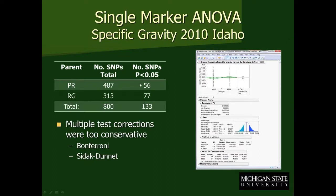We said let's just do single marker ANOVAs on all 800 simplex segregating SNPs. In Premier Russet we have 487 simplex SNPs segregating, and in Rio Grande we have 313. Of those, 56 and 77 SNPs ended up having significant probabilities for specific gravity. However, if we use multiple test corrections — Bonferroni or Sidak-Dunn — none of the SNPs actually show significance.